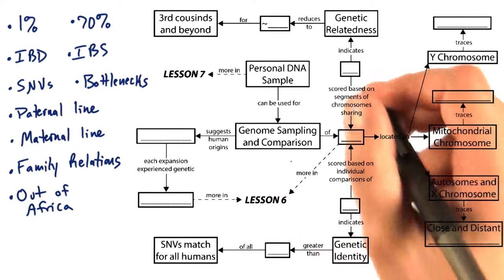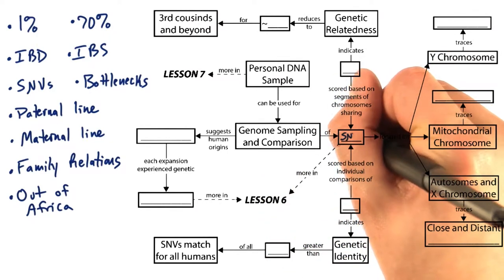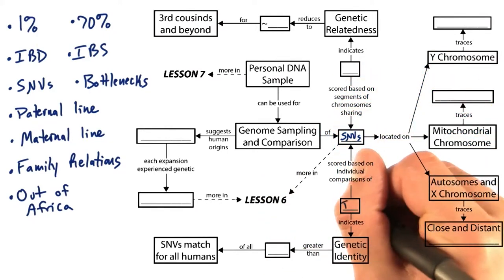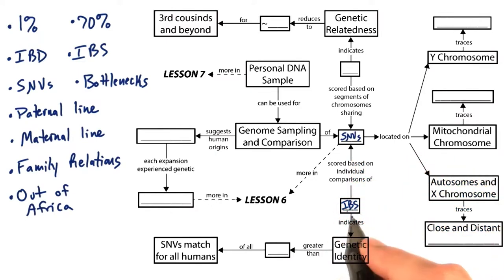And what we're going to be doing is genome sampling and comparing individual SNVs. Now an IBS score, or identity by state, is a score based on individual comparisons of individual SNVs. This indicates a genetic identity.